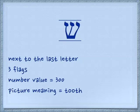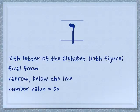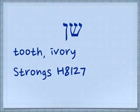You'll find Shin under the value for 300. The distinguishing characteristic of it is the three flags, and the number value is 300. The picture meaning of the word is tooth. This letter is the final Nun — we learned the regular Nun in a previous lesson. You find it under the bracket for number 50, the one on the left. It comes down below the line and is just a narrow figure.